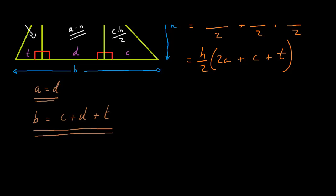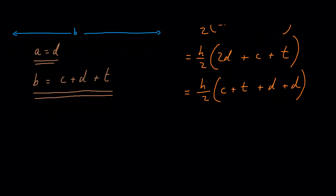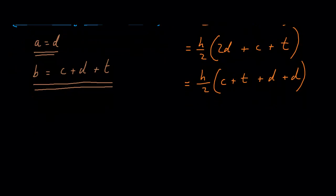If this is the case, this formula transforms into H over 2 multiplied by 2D plus C plus T. And this is the same as saying H over 2 multiplied by C plus T plus D plus D. But, C plus T plus T plus D is B.